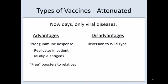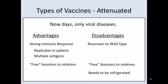There are mutations that happen and the pathogen gets those virulence genes back. Also, free boosters to relatives — people don't like this, understandably. When someone in the home has a suppressed immune system, you want to control who's being exposed to the vaccine. And the last disadvantage: most of these need refrigeration. That's not a problem in this country, but when you take vaccines to highly rural areas — rural Africa, rural Southeast Asia, rural South America — it becomes a problem when you don't have access to electricity.